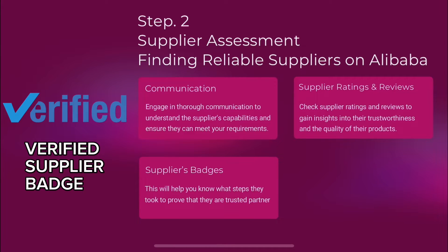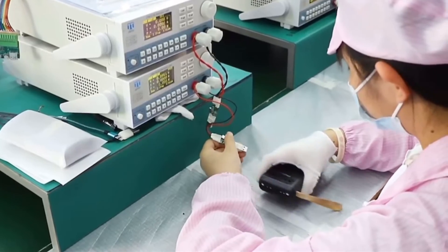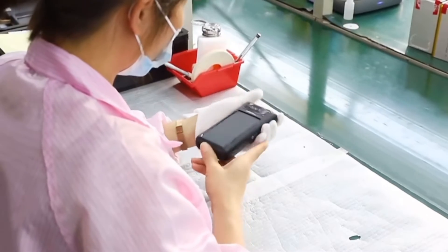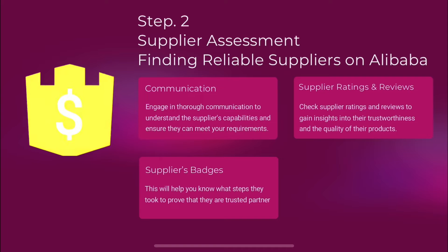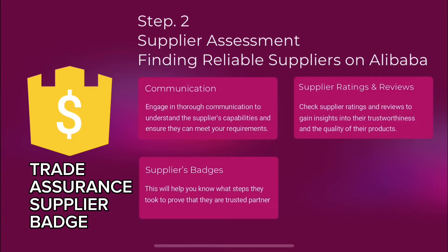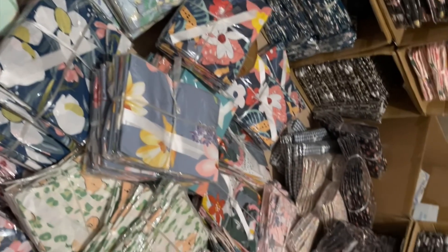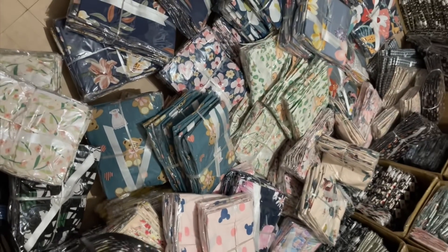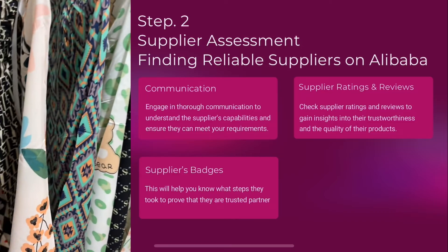Gold suppliers can accommodate high-volume orders, and you have to pay a membership fee to get the gold supplier badge. Next is the verified seller badge — these are suppliers whose company profile, management, production capabilities, and processes have been assessed, certified, and inspected by third-party institutions. You would see different certifications on their profile. Then there is the trade assurance supplier badge, which is highly recommended for beginners in the importing process.